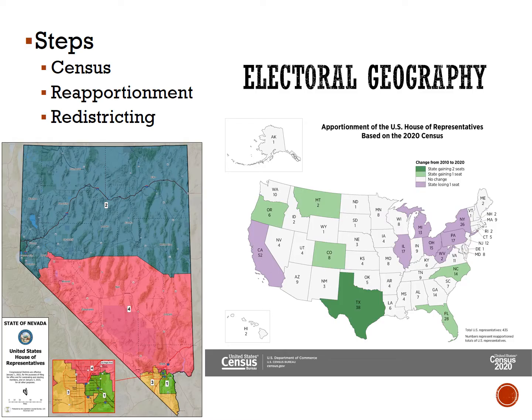So after reapportionment, or the reallocation of House seats, each state goes through the process of redistricting. Redistricting means that the voting districts are redrawn to accurately reflect the new census data, and this happens every 10 years. Redistricting takes place at the subnational level, with individual states responsible for drawing their own electoral district lines. Here's where scale is important — these representatives represent a more local community, only a section of a state, but they vote on policies at the national scale. When states gain or lose representation, that affects the state as a whole.